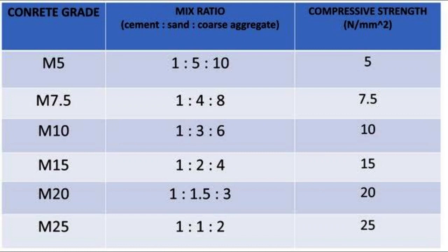Question 10: Tell us the ratio of different mixes. Ratio of cement : sand : aggregates — for M5: 1:5:10; for M7.5: 1:4:8; for M10: 1:3:6; for M15: 1:2:4; for M20: 1:1.5:3.